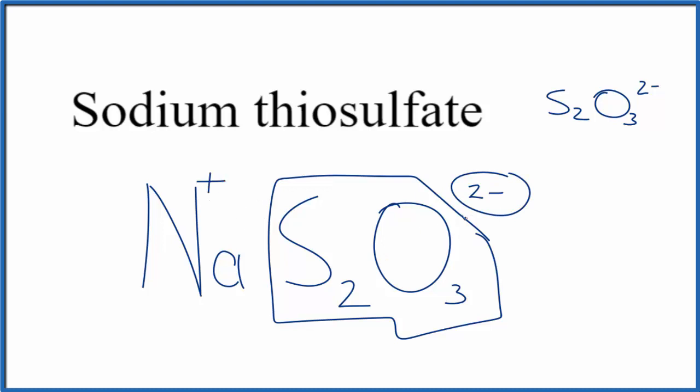So we need two of these sodiums to balance out the 2-minus to give us a net charge of zero. Let's remove all these symbols, and this is the formula for sodium thiosulfate: Na2S2O3.